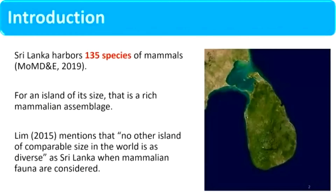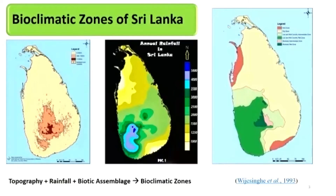First, the introduction. Sri Lanka has 135 species of mammals as of 2019, which is a good mammalian assemblage considering Sri Lanka is an island. In 1993, six bioclimatic zones were proposed for Sri Lanka depending on topography, rainfall, and biotic assemblage. We selected three of those zones — specifically three protected areas in three of those zones — for our study.